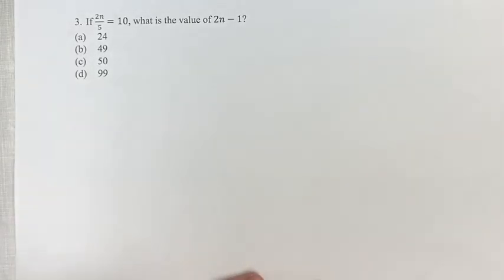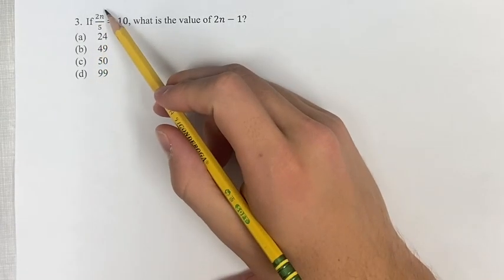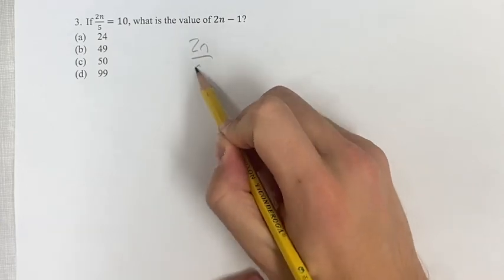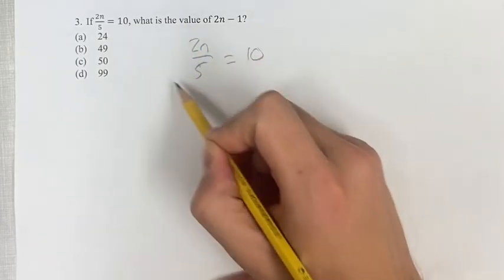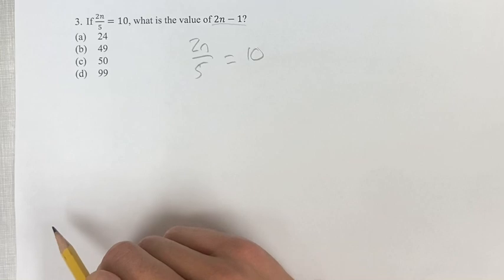Hello, and welcome back to another video. In this problem, we're told that 2n over 5 is equal to 10, and we're asked to use this equation to find the value of 2n minus 1.